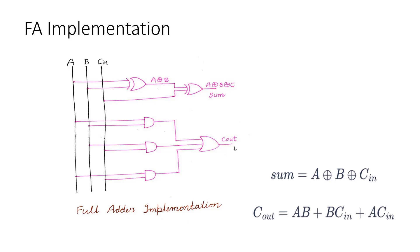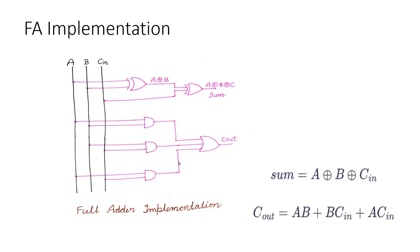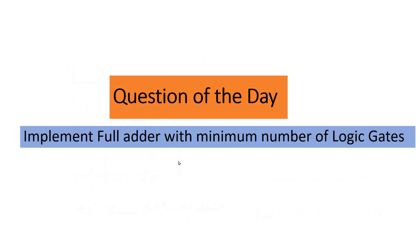But this is not the optimal implementation. My question to you is: can you implement the full adder with a minimum number of logic gates? The gates used so far are more in number and we can implement the same logic with fewer gates. You can pause the video, think about the answer, and write it in the comment section. The solution will be published in upcoming videos, so please subscribe and press the bell icon.